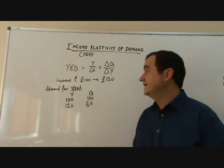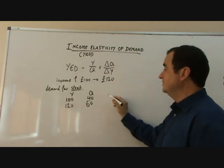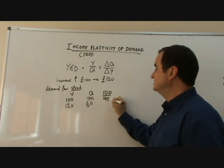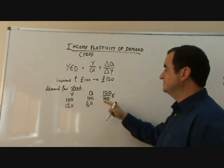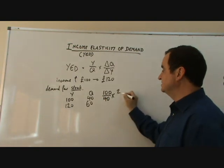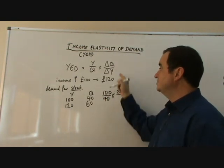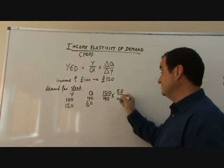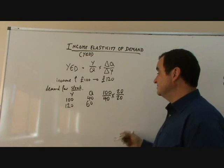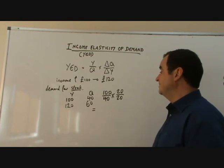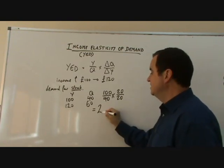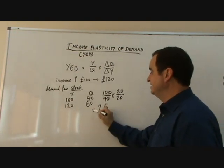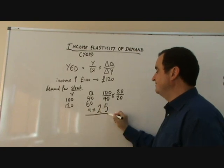Let's calculate the value of the YED. Y over Q is 100 divided by 40, times the change in quantity — quantity rose by 20, so 20 — divided by the change in income, which is also 20. So, 100 over 40 times 20 over 20. If you do the maths, that comes to plus 2.5.